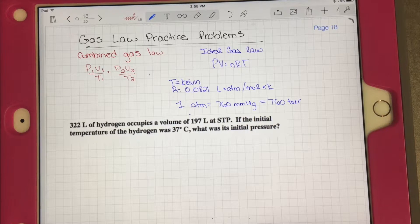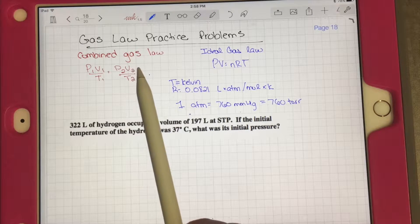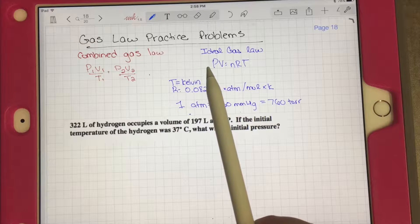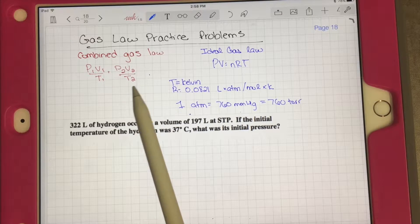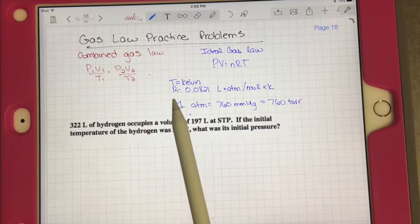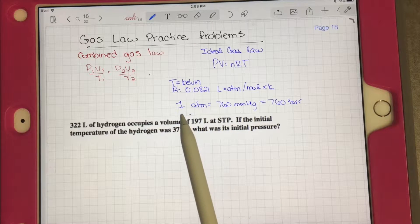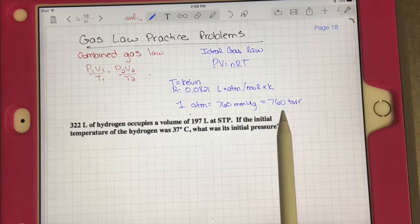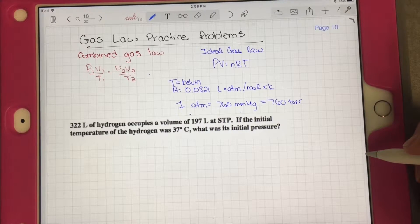In this video, we're going to be going over just a few gas law practice problems from Chapter 5. In a recap from the Chapter 5 video, we have the combined gas law and the ideal gas law. We use ideal gas law when the problem mentions moles or grams, and we use the combined gas law when it doesn't mention moles or grams. Our temperature has to be in Kelvin. Our ideal gas law constant is 0.0821, and 1 ATM equals 760 millimeters of mercury equals 760 torr. These are units for pressure. So moving on to our first problem.